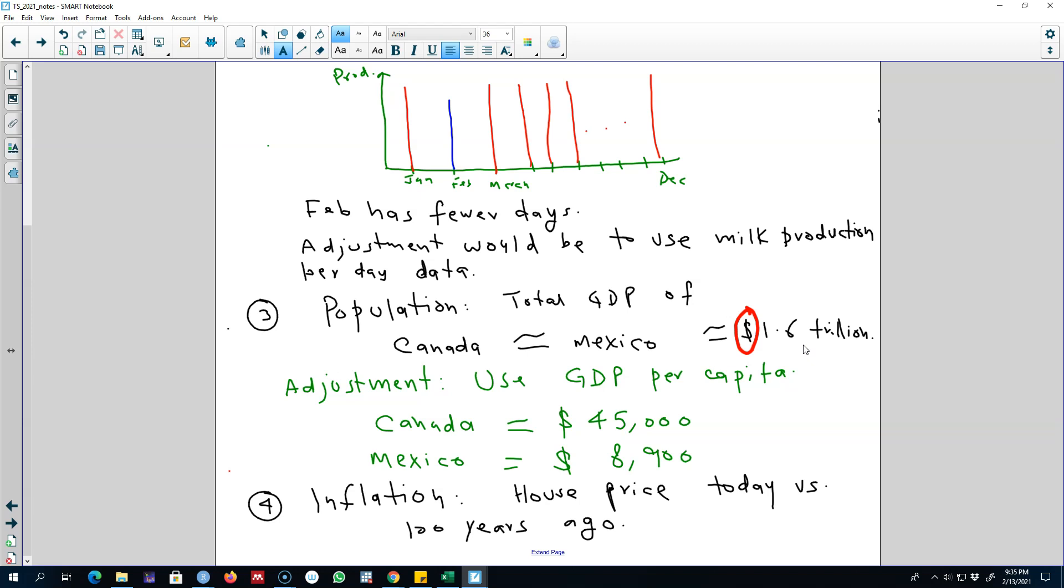Another example could be the number of beds in hospitals in various cities. Just by looking at the number of beds, you cannot say that the health facilities in one city are better than in another city.